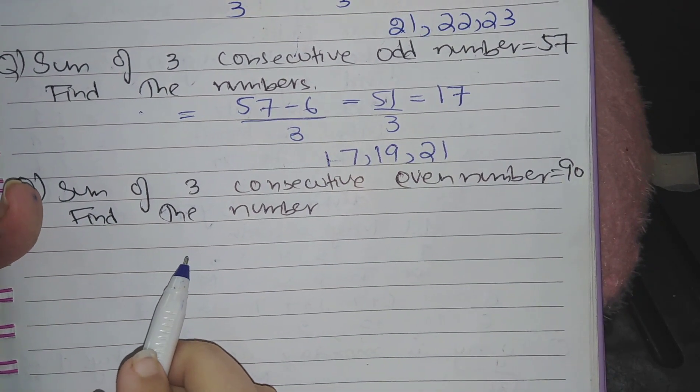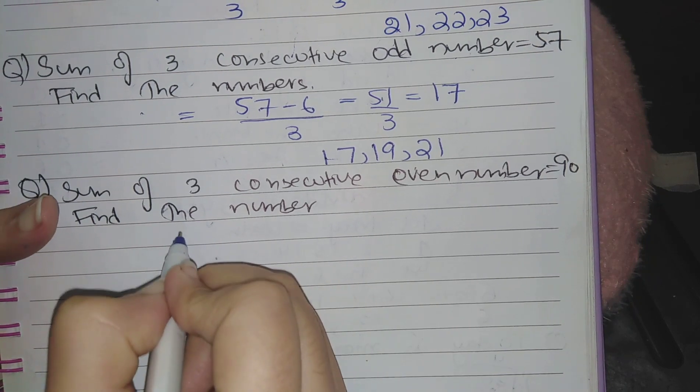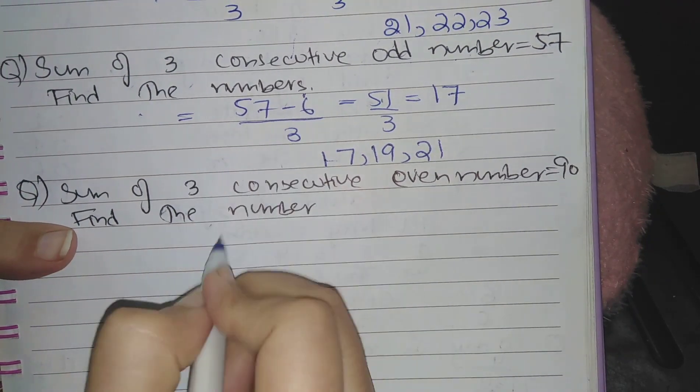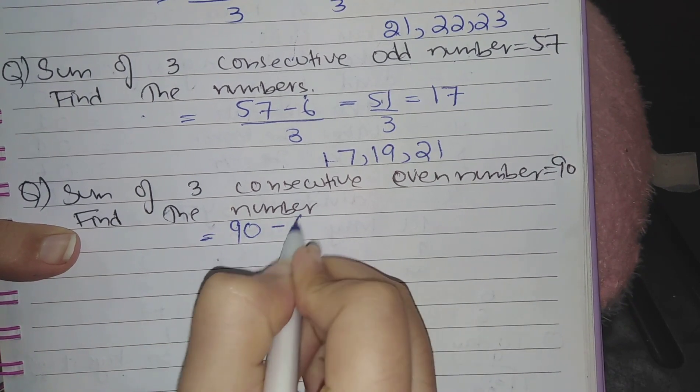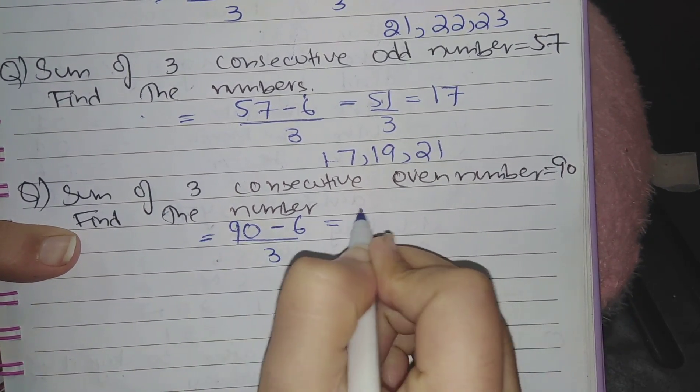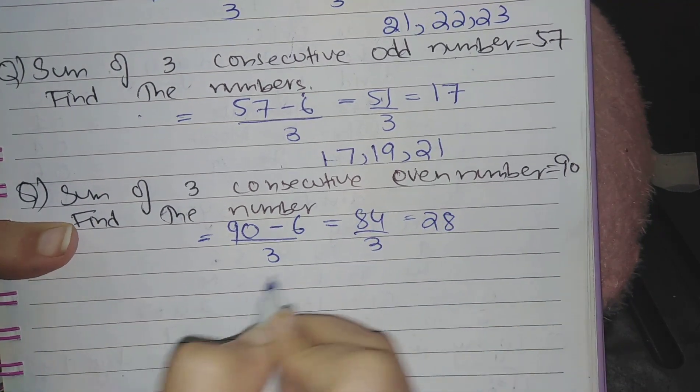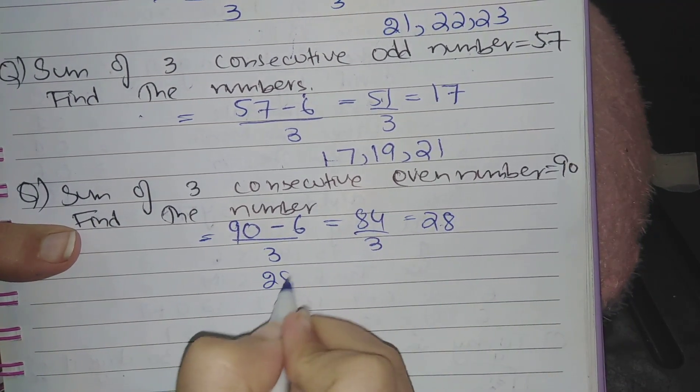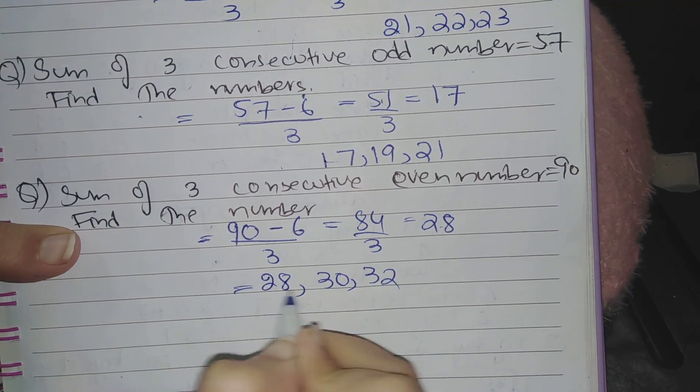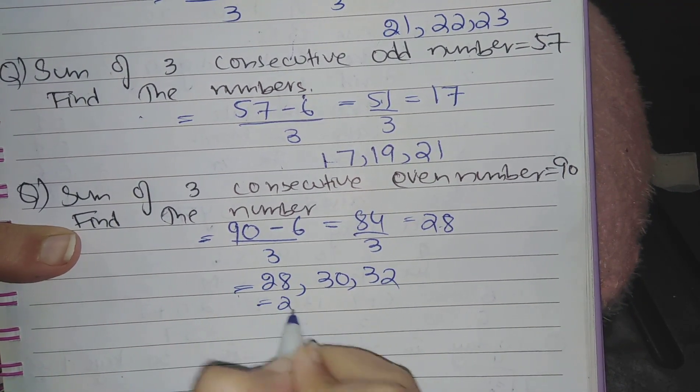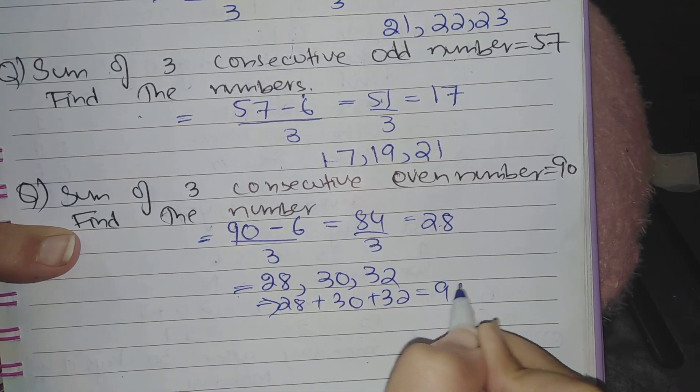Another type of question where sum of three consecutive even numbers is given and you have to find the numbers. The trick is same as for odd numbers. Write down the sum, subtract 6, and divide it by 3. This will be 84 by 3 which is equal to 28. So consecutive even numbers after 28 are 30 and 32. When these are added, 28 plus 30 plus 32, result will be 90.